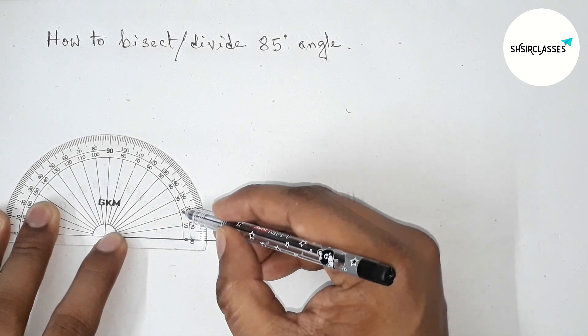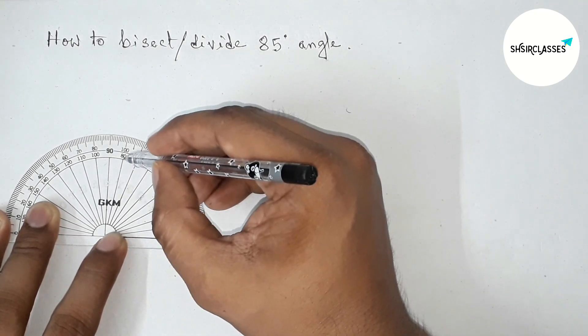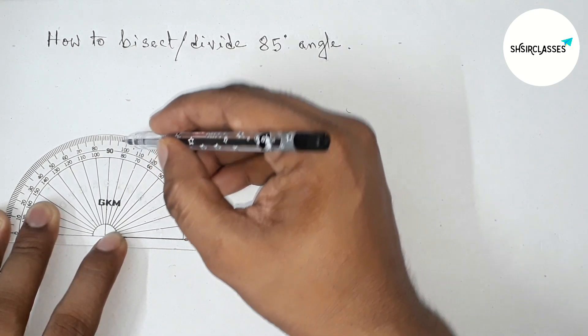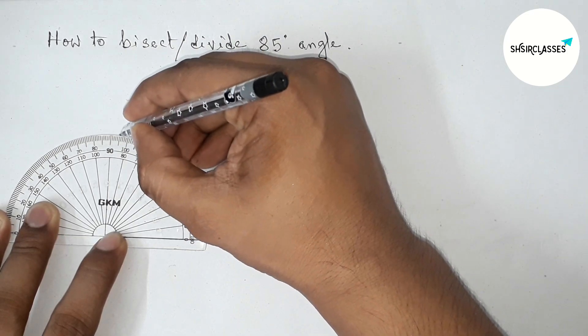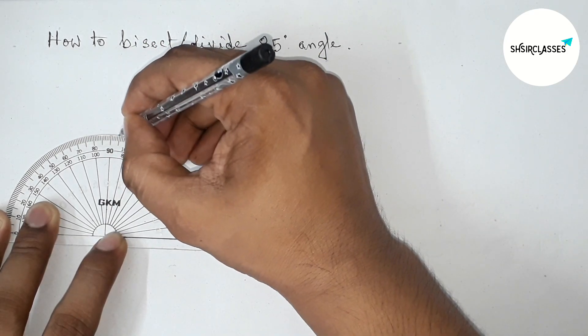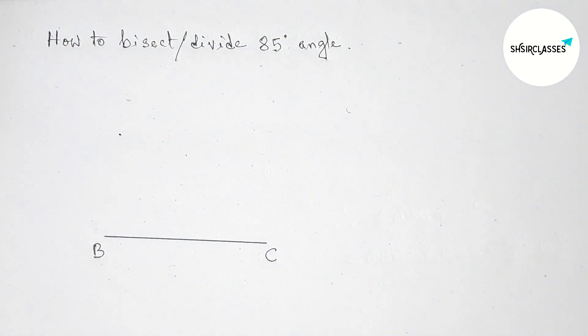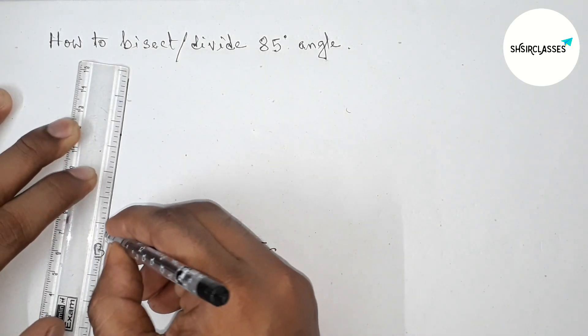0 and 10, 20, 30, 40, 50, 60, 70, 80, 90. And between 90 to 80 we can find 85. So this is 85 degree angle, between 90 to 80. Now joining this line to get here 85 degree angle.